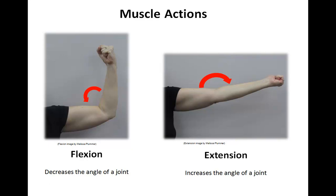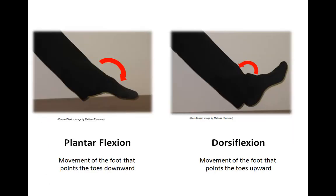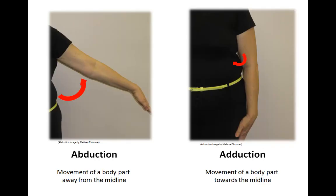Flexion decreases the angle of a joint. Extension increases the angle of the joint, as seen here with the elbow. Plantar flexion is movement of the foot that points the toes downward, as if you were standing on your tippy toes. Dorsiflexion is movement of the foot that points the toes upward. Abduction is the movement of a body part away from the midline, while adduction is the movement of a body part towards the midline.